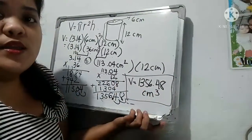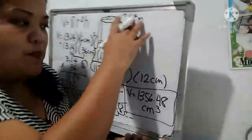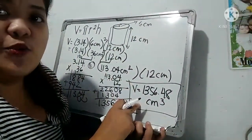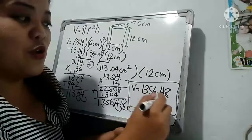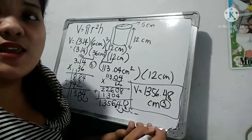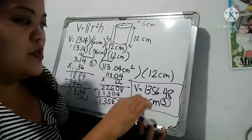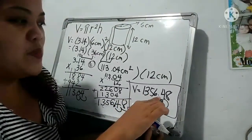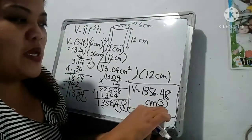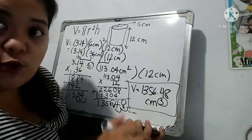Again, when we have the final answer in volume, it is cube. Okay, so the unit is cube. So we have 1356.48 cm³ or cm cube.